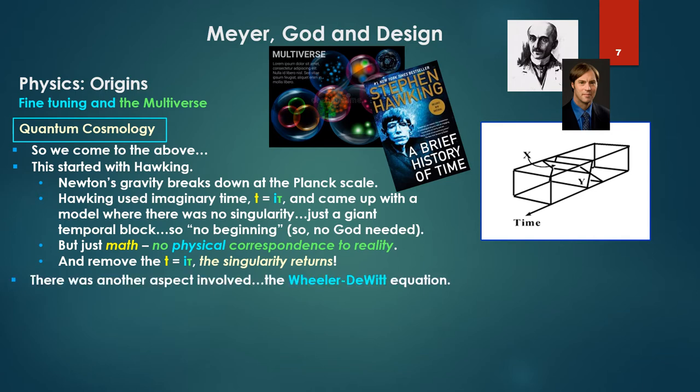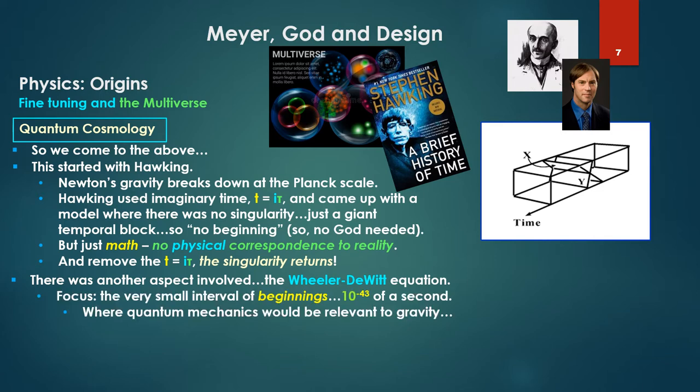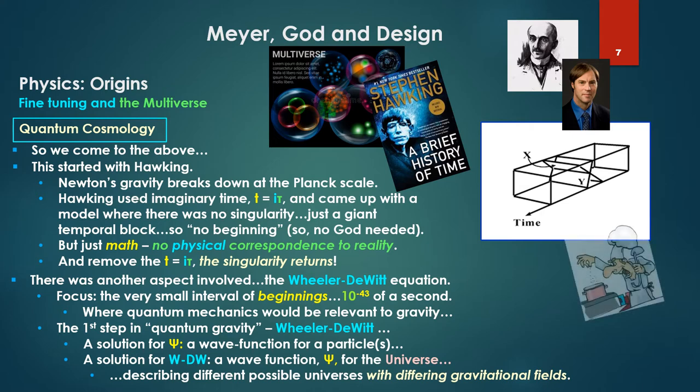There was another aspect involved: the Wheeler-DeWitt equation. The focus was the very small interval at the beginning—10 to the minus 43rd of a second—where quantum mechanics would be relevant to gravity. The first step in quantum gravity is Wheeler-DeWitt. So a solution for the wave function psi: you have a wave function for a particle or set of particles. For Wheeler-DeWitt, you've got a wave function psi for the universe describing different possible universes, but adding the ingredient of different gravitational fields—universes with differing gravitational fields.